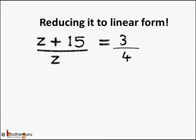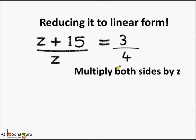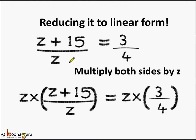Let's try to reduce it to the linear form. z plus 15 by z is equal to 3 by 4. First, we multiply both sides by z. Why do we need to do that? Because if we multiply both the LHS and the RHS by z, the z in the denominator will cancel out. So z multiplied by (z plus 15) divided by z is equal to z multiplied by 3 by 4.